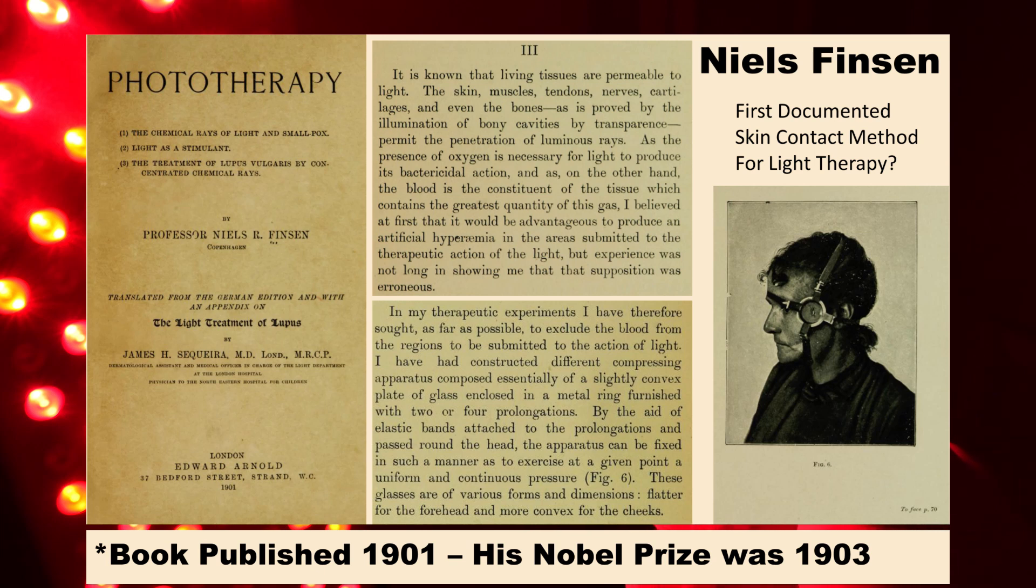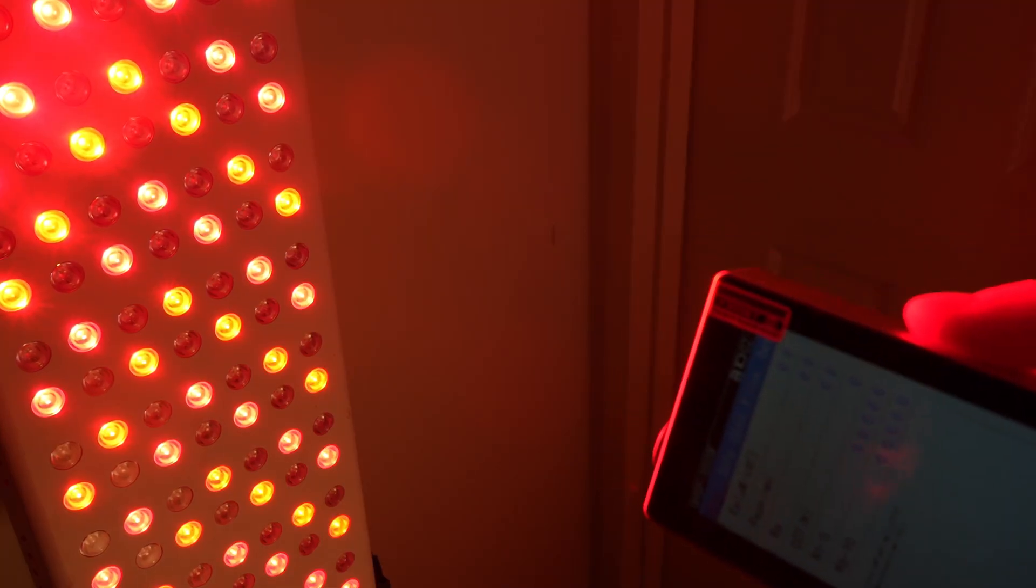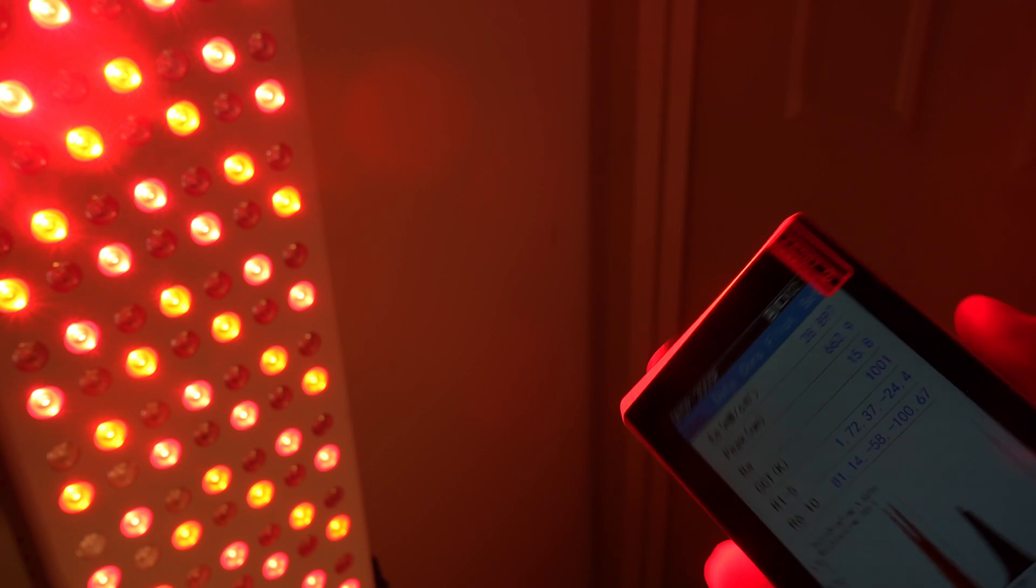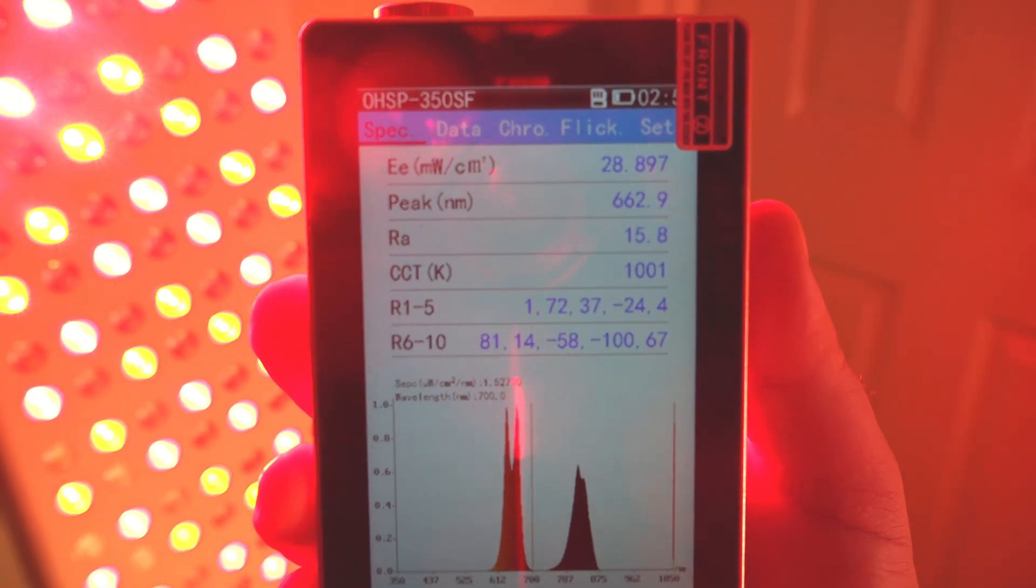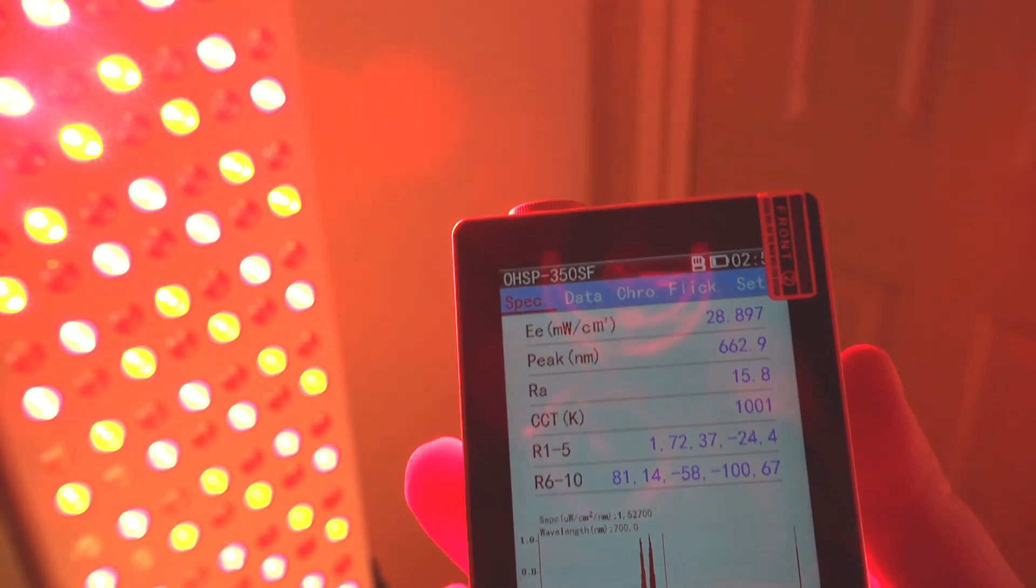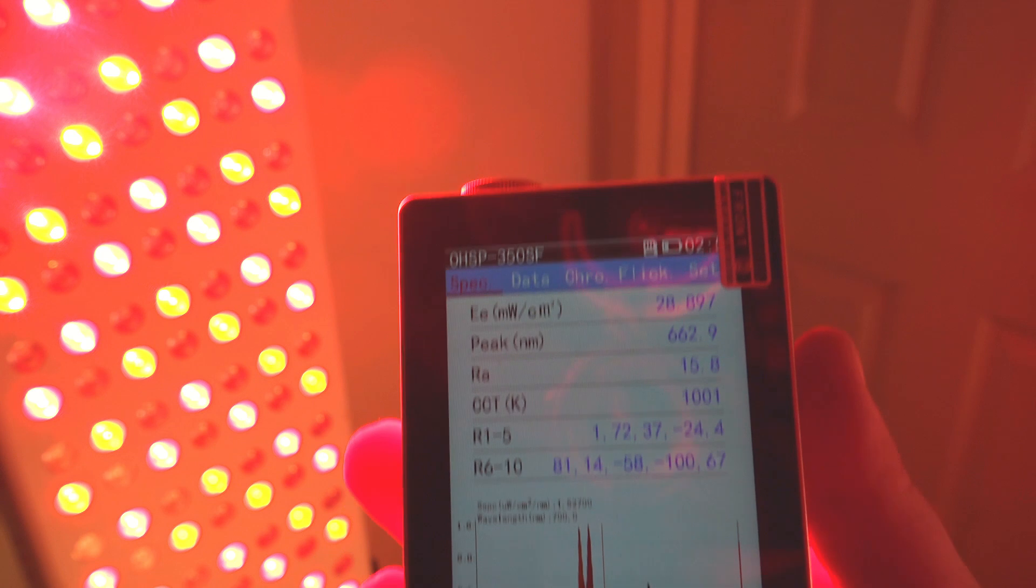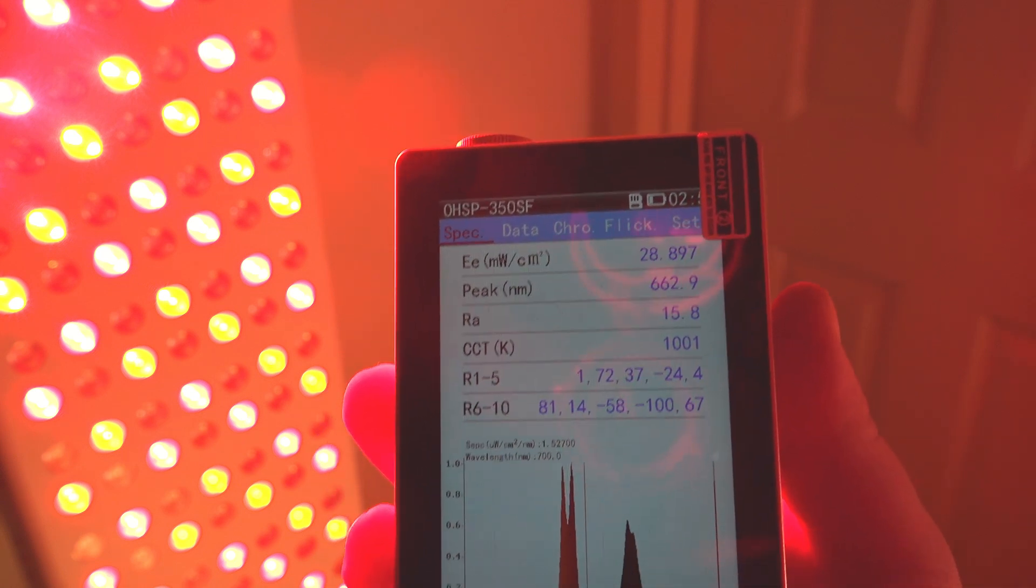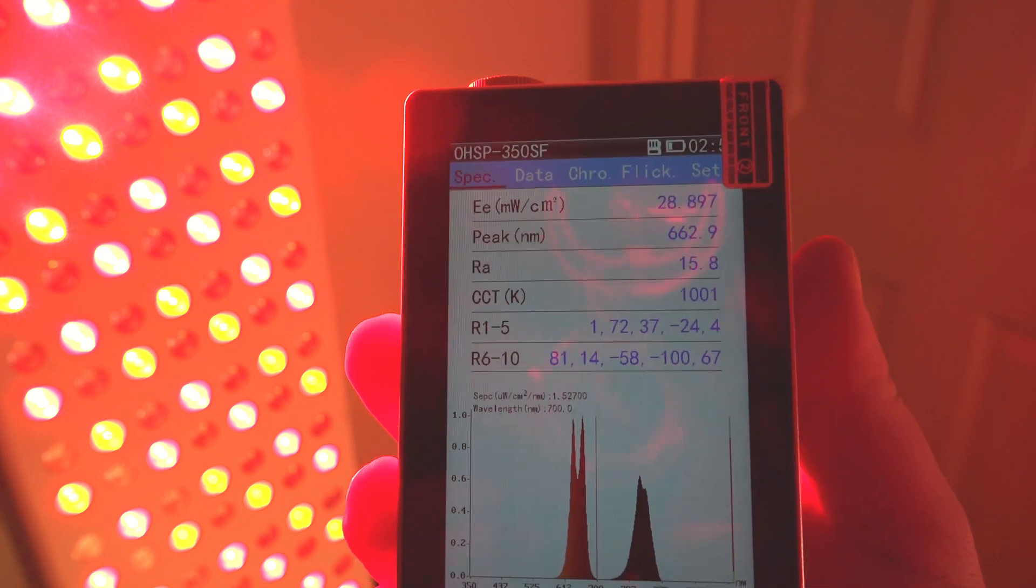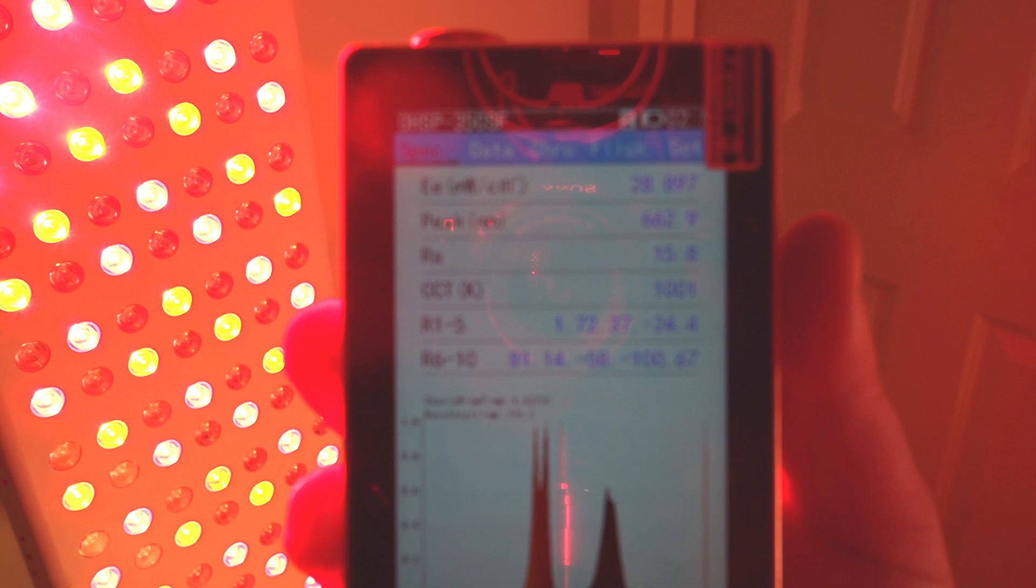So we're about 18 inches away from our Gemba Red overclocked panel here, and we get about 28 milliwatts per centimeter squared. That's really good for a full body panel. Most of the studies used about 28 milliwatts per centimeter squared, but we have to appreciate that full body light therapy is more of a superficial and systemic light therapy, and it's not a deep penetration targeted therapy.